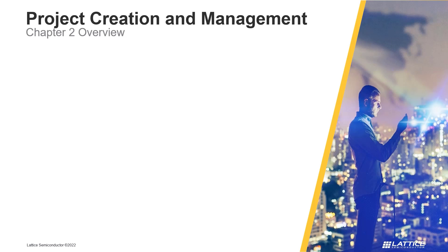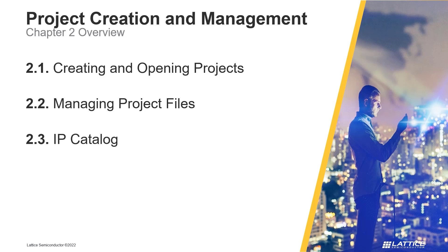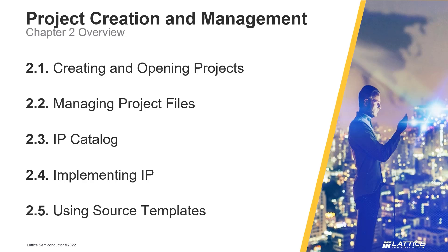Chapter 2 consists of five sections. In the first section, called Creating and Opening Projects, the general process for creating Radiant projects and opening existing projects are covered. In section 2, Managing Project Files, we will introduce Radiant's File List tab and discuss the basics of using it for file management. In the third section, called IP Catalog, we will discuss Radiant's IP Catalog and how it can be used to download and install IP. In the fourth section, Implementing IP, the general process for generating an IP component and instantiating it in a design are reviewed. Finally, in the fifth section, Using Source Templates, we will discuss Radiant's Source Templates tab and how it can be used to use source templates in Radiant projects.